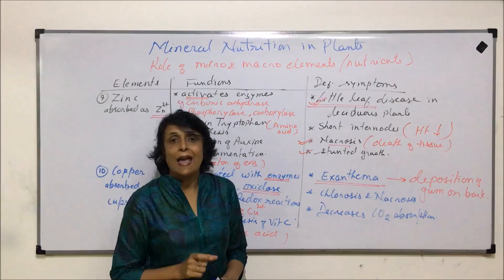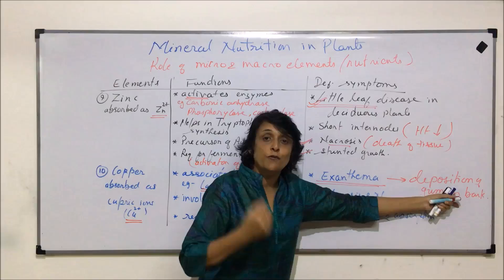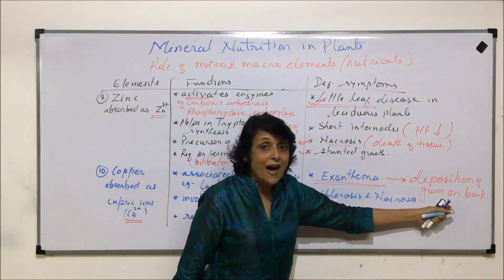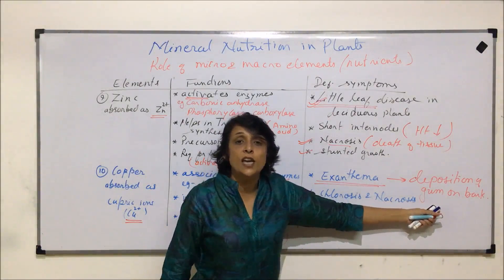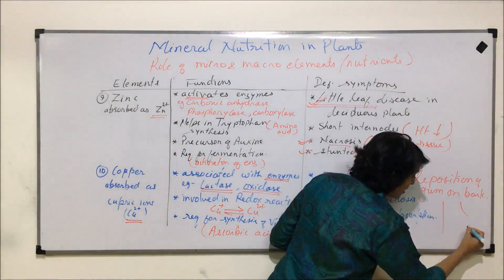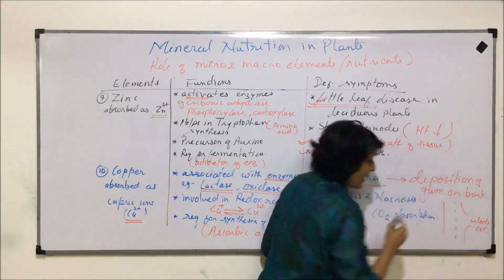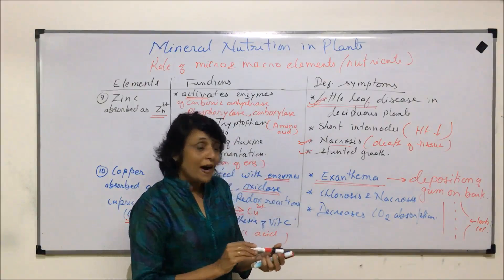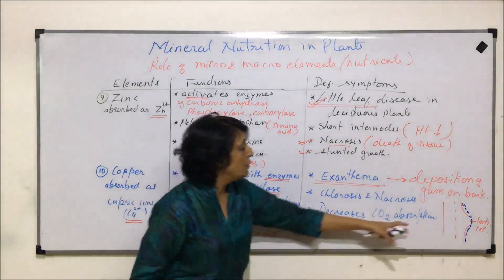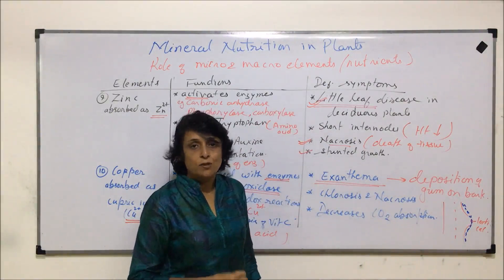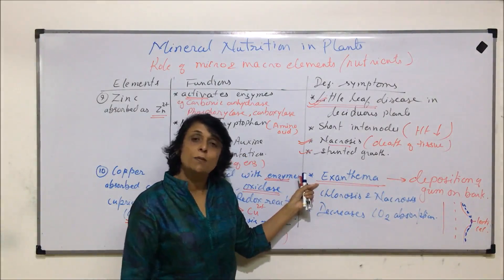Bark refers to all tissues outside the vascular cambium. It contains lenticels — openings that form during secondary growth through which gaseous exchange takes place. If gum is deposited all over the bark, it covers the lenticels, blocking gaseous exchange. Without gaseous exchange, it results in necrosis of that area or ultimately plant death.